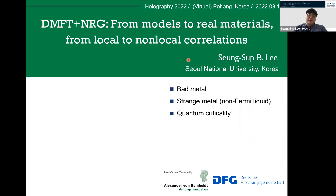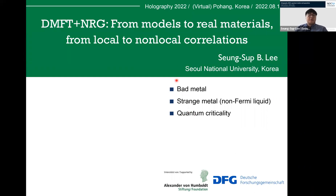My research has not much relation with holography, but I think I was invited because I share common interests with people who are using holography for studying condensed matter systems. Mainly, I want to understand and predict emergent quantum phenomena such as bad metal, strange metal, and quantum criticality. In my talk today, I'll tell you about a powerful numerical approach that can deal with all these emergent quantum phenomena for systems ranging from simplified models to real materials, and also can deal with general types of strong correlations.